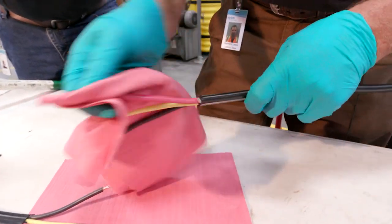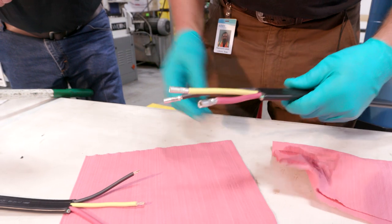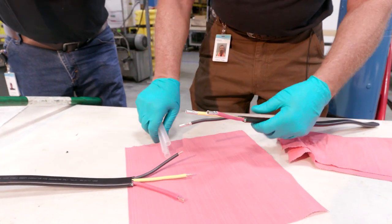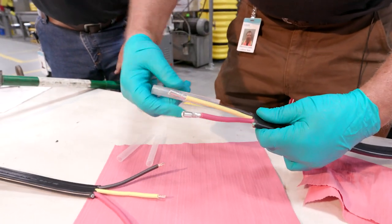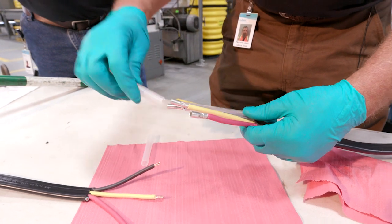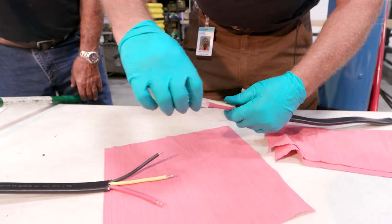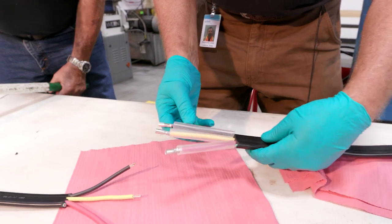Then we're going to take and slide our heat shrinks on at this point. Slide our heat shrink on here, slide it down. Make sure you have these on there because once you crimp it, no turning back.